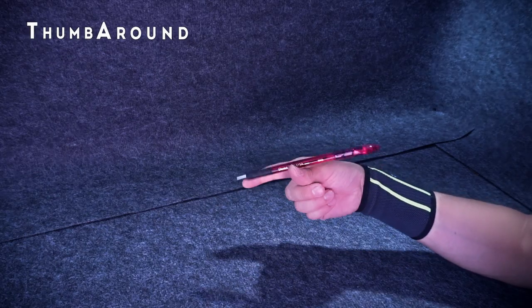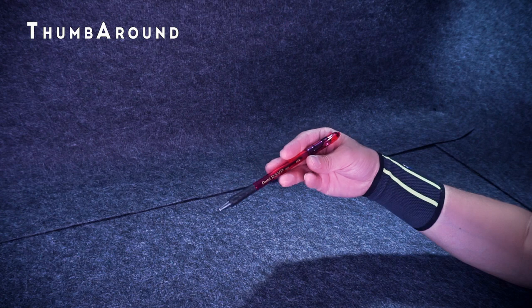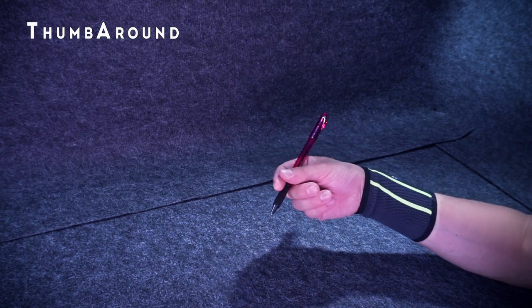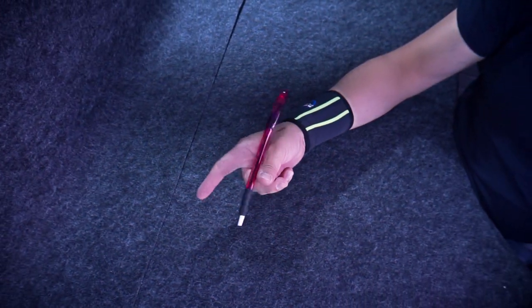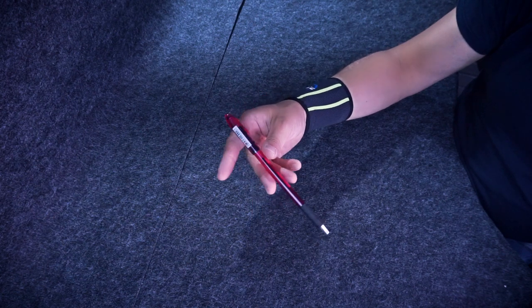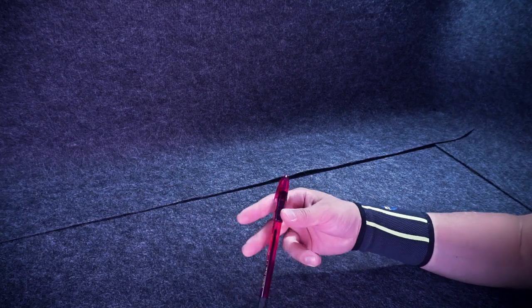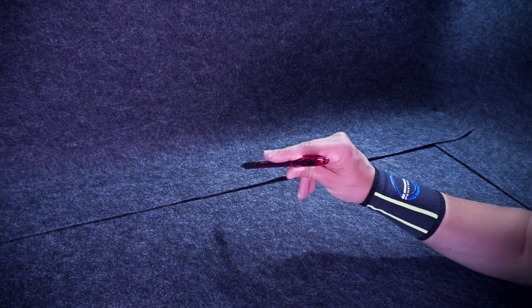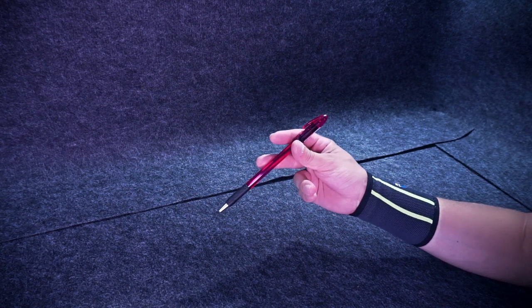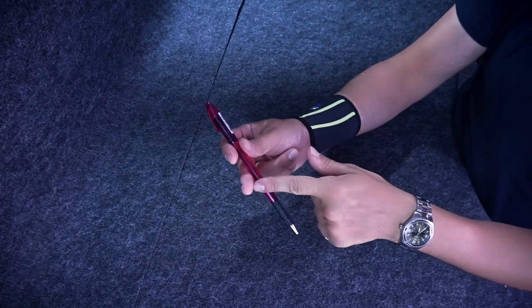Let's start with thumb around. It looks like this. To do this trick, put your pen on index and middle fingers like this and press it with your thumb closer to one of its tips. Middle finger is at pen's center.